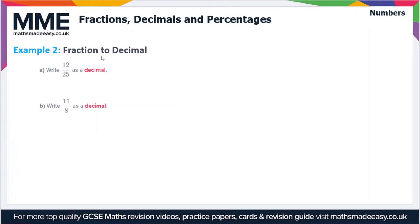Example 2: we've got fractions to decimals this time. We have to write 12 over 25 as a decimal for part a. So 12 over 25 is equal to 12 divided by 25. We treat the line in the fraction as a division symbol, so we're going to use the bus stop method here since this is a non-calculator topic.